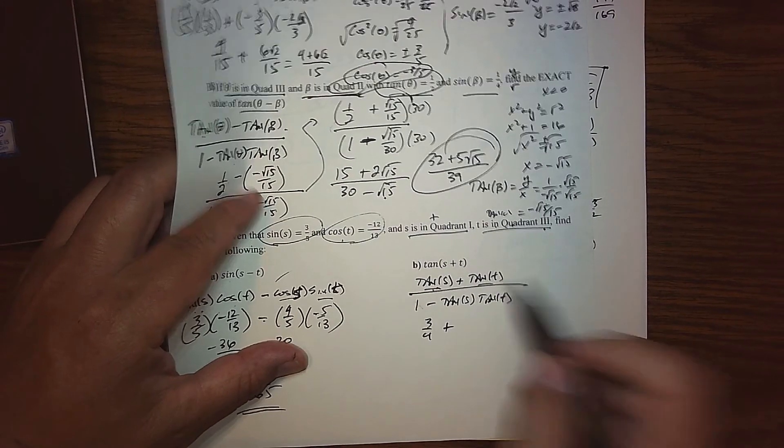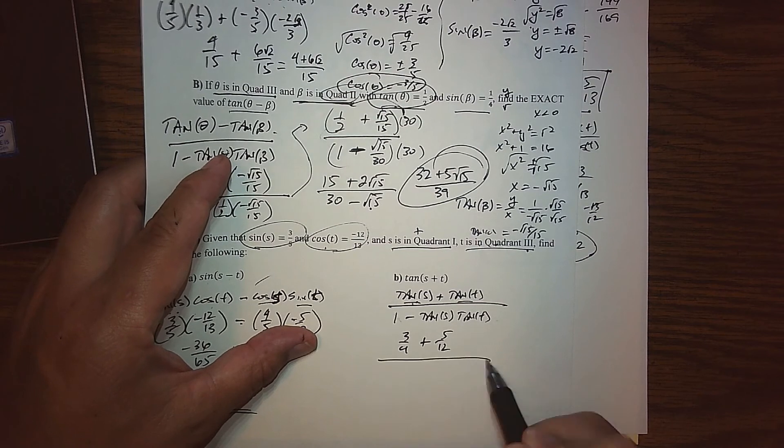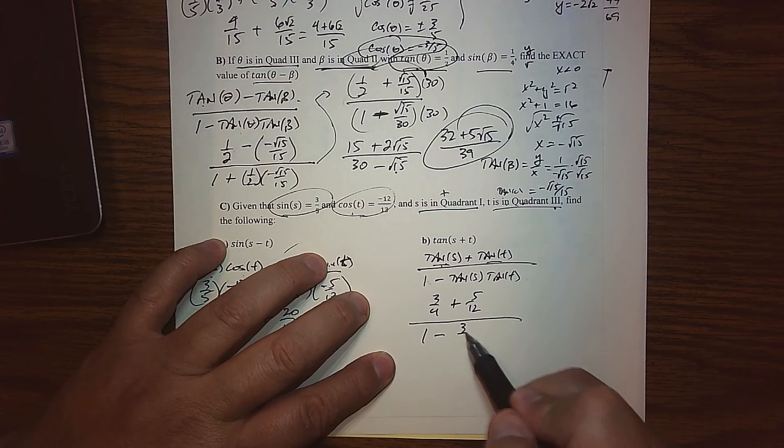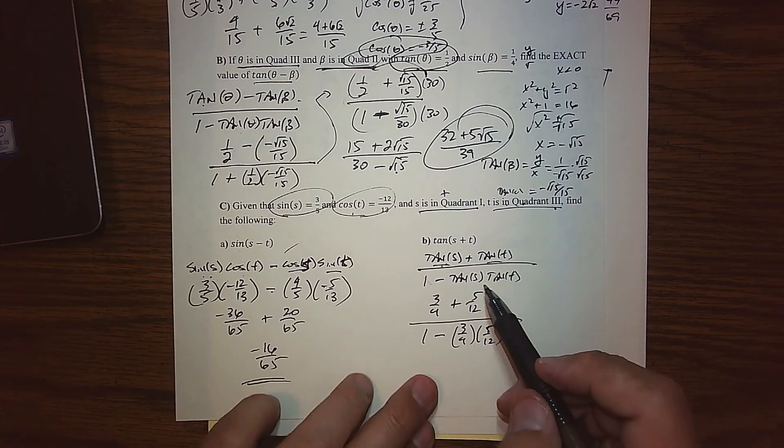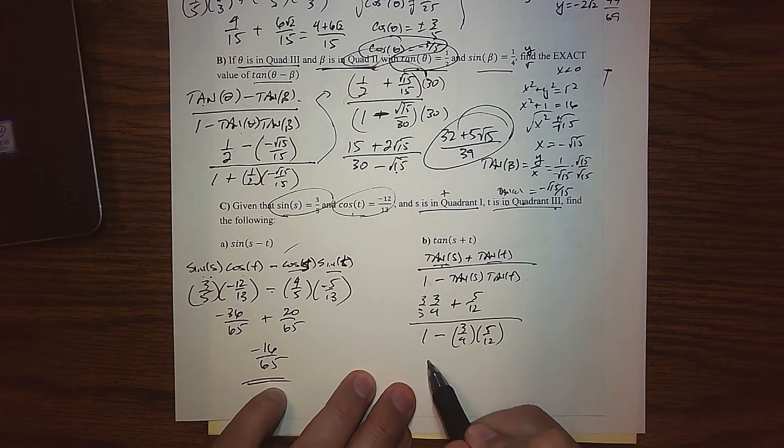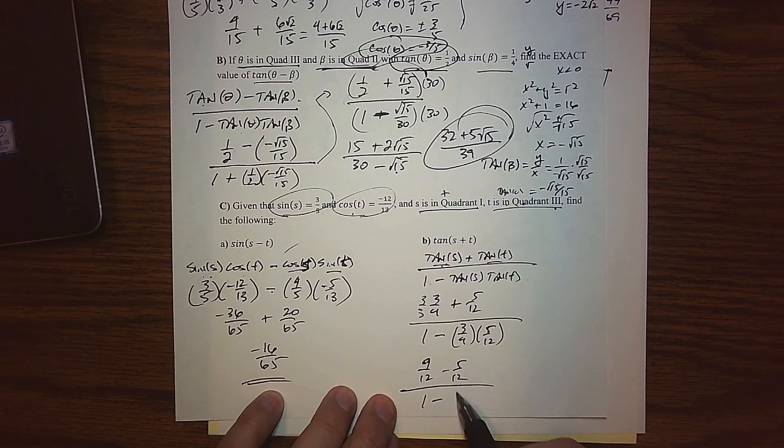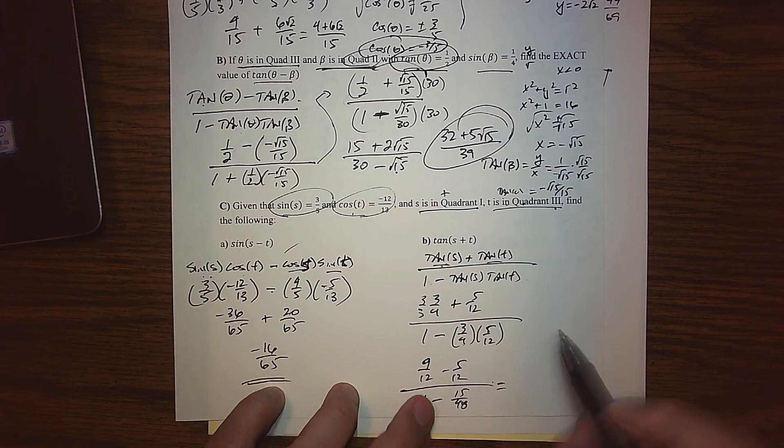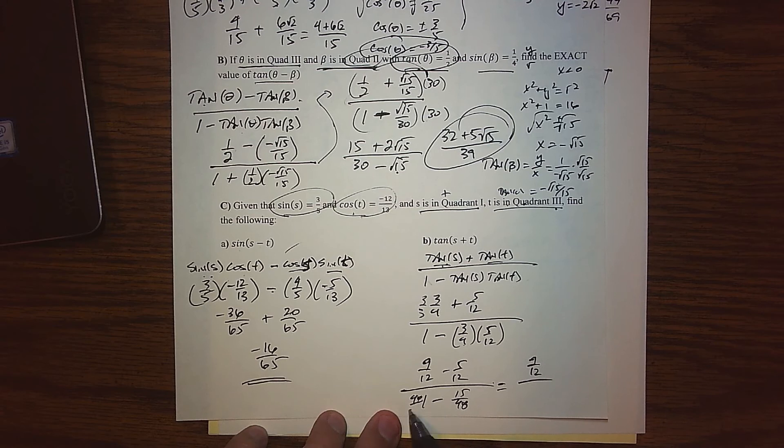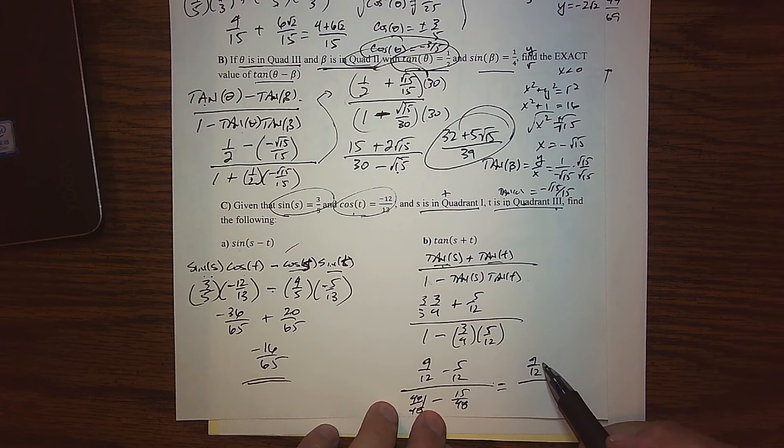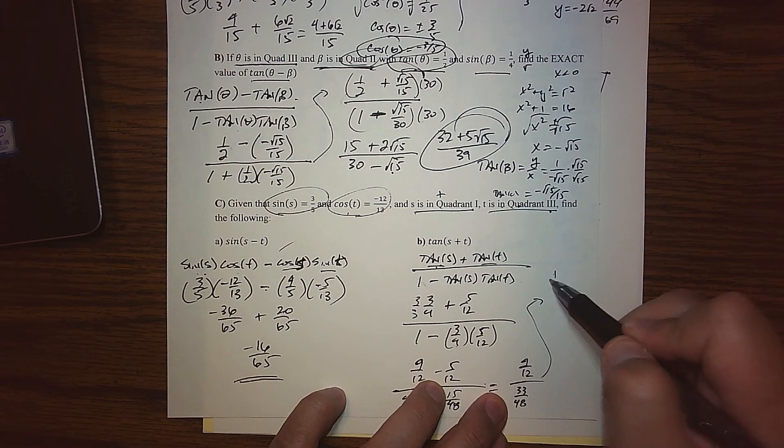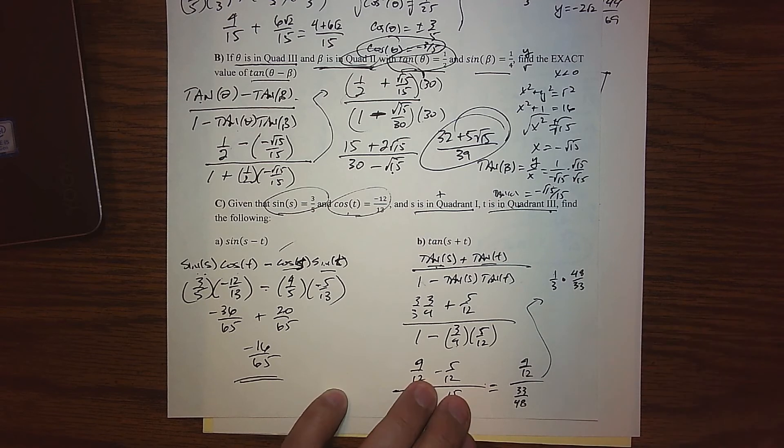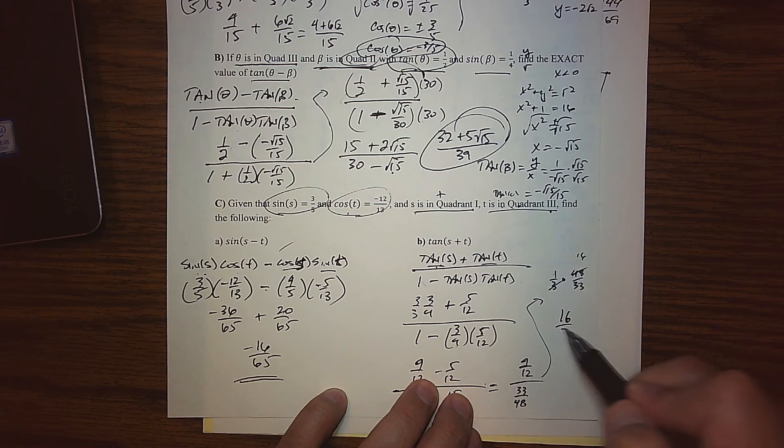For over here, we know that the tangent of s, we found that to be 3 fourths. And then the tangent of t, we found to be 5 twelfths. And this is all over 1 minus, well, the tangent of s is 3 quarters, and the tangent of t is 5 twelfths. So again, we just have a bunch of fraction work ahead of us to do. Upstairs, we find the common denominator, so 3 over 3. So that's 9 twelfths minus 5 twelfths. And on the bottom here, we have 15 over 48. So this is 4 twelfths. And down here, this is 48 over 48. So 48 take away 15, that's 33. So 33 over 48. If we want to reduce this, let me bring it up here. This is 1 third multiplied by the reciprocal. And then 3 goes into 48 16 times. So we get 16 over 33.